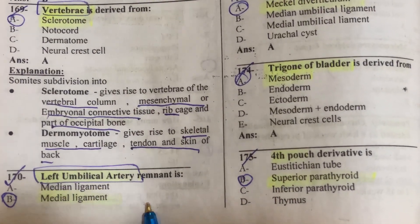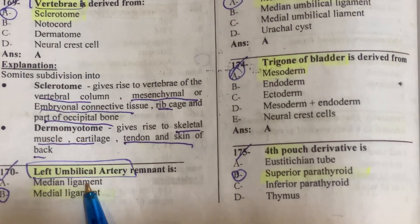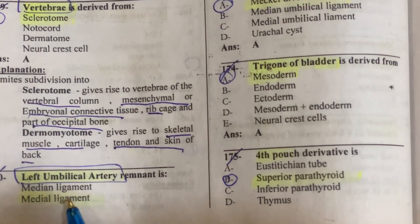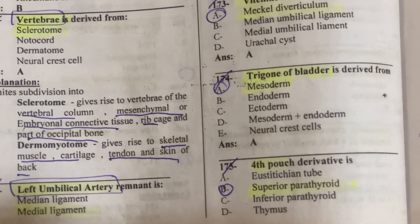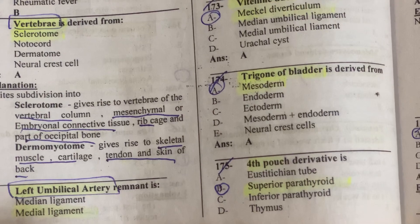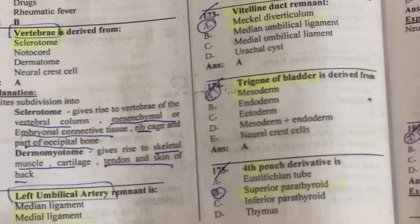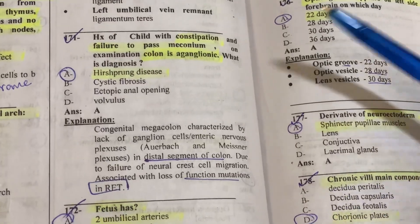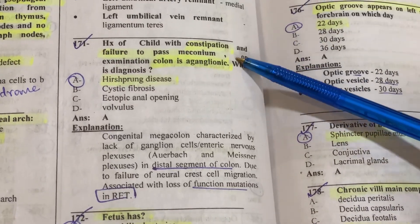The medial umbilical ligament is the remnant of the umbilical arteries. The umbilical vein becomes the ligamentum teres after birth.